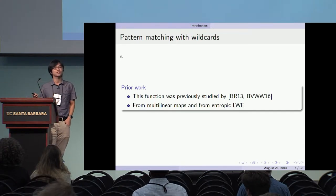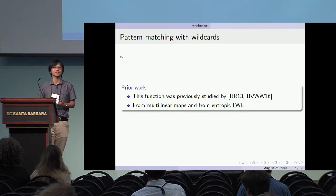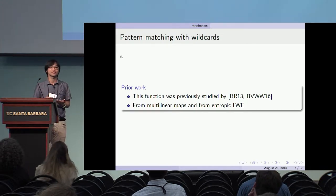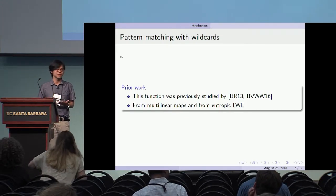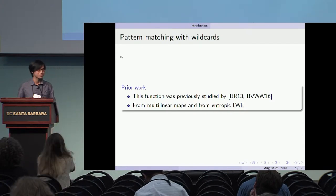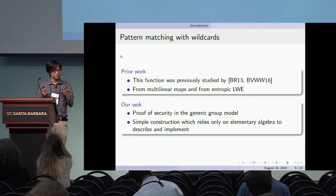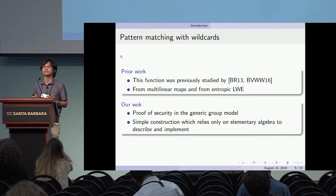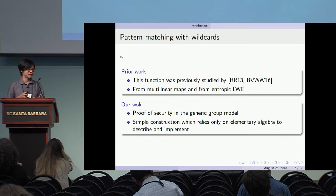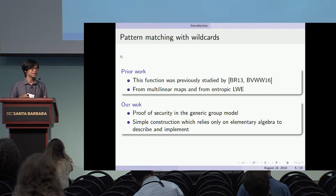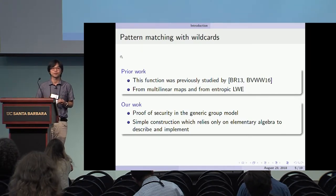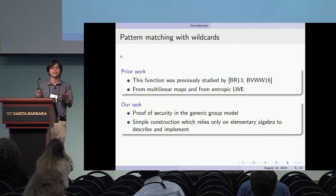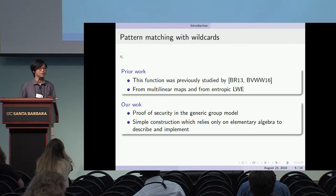This function class was previously studied under the name of obfuscating conjunctions. Past schemes were constructed based on multilinear maps and on the Entrap-LWE assumption. We want to get an obfuscation scheme for the same function class, but in the generic group model. The assumption will be easy to understand, and the construction itself will be much simpler — it essentially just computes some number, exponentiates it using a group element, and multiplies those together.